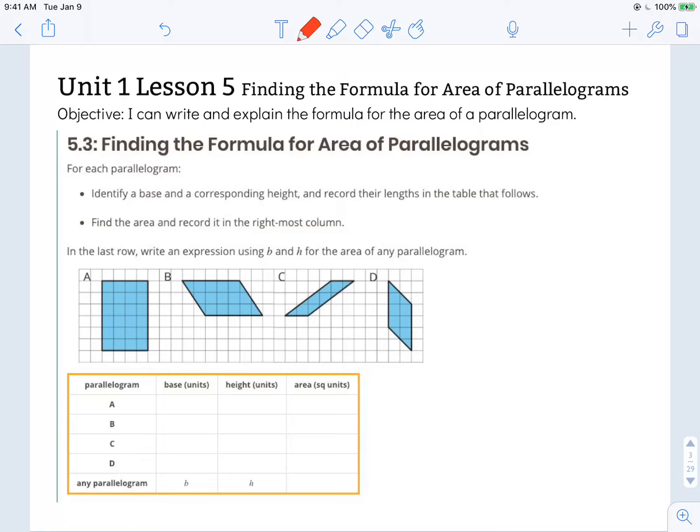So A is pretty straightforward. Remember, for a base and height, they must have a perpendicular relationship, which means that when they intersect, they form a 90 degree angle or a square angle. So for A, we could label any of the sides our base and one of the perpendicular sides could be our height.